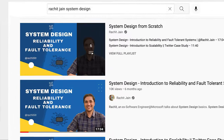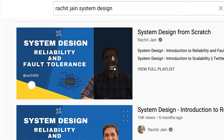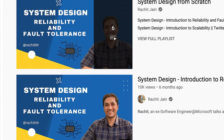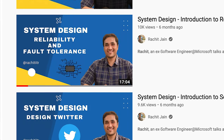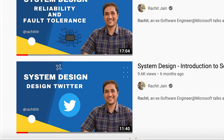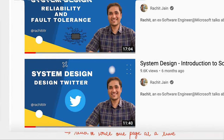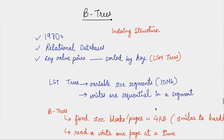Welcome to another video in our system design playlist series, in which we pick topics one by one and decode them. The topic for today will be B-trees. So far we've been trying to really dig deep into how databases work internally — how they handle reads, how they handle writes, and how they handle crash scenarios.